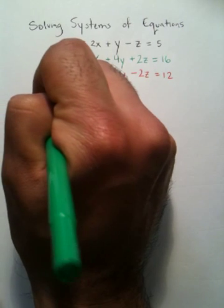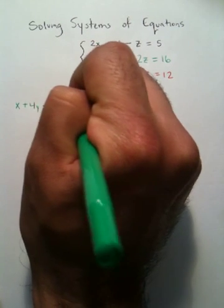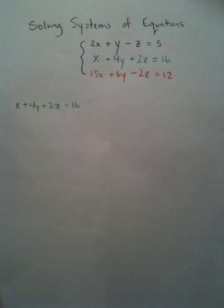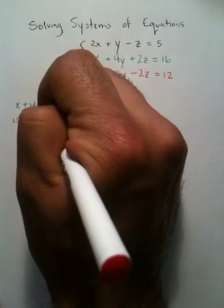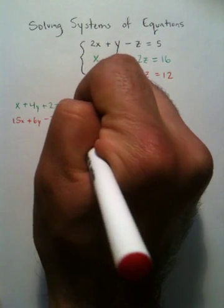So, x plus 4y plus 2z equals 16. And then you have your other function, 15x plus 6y minus 2z equals 12.